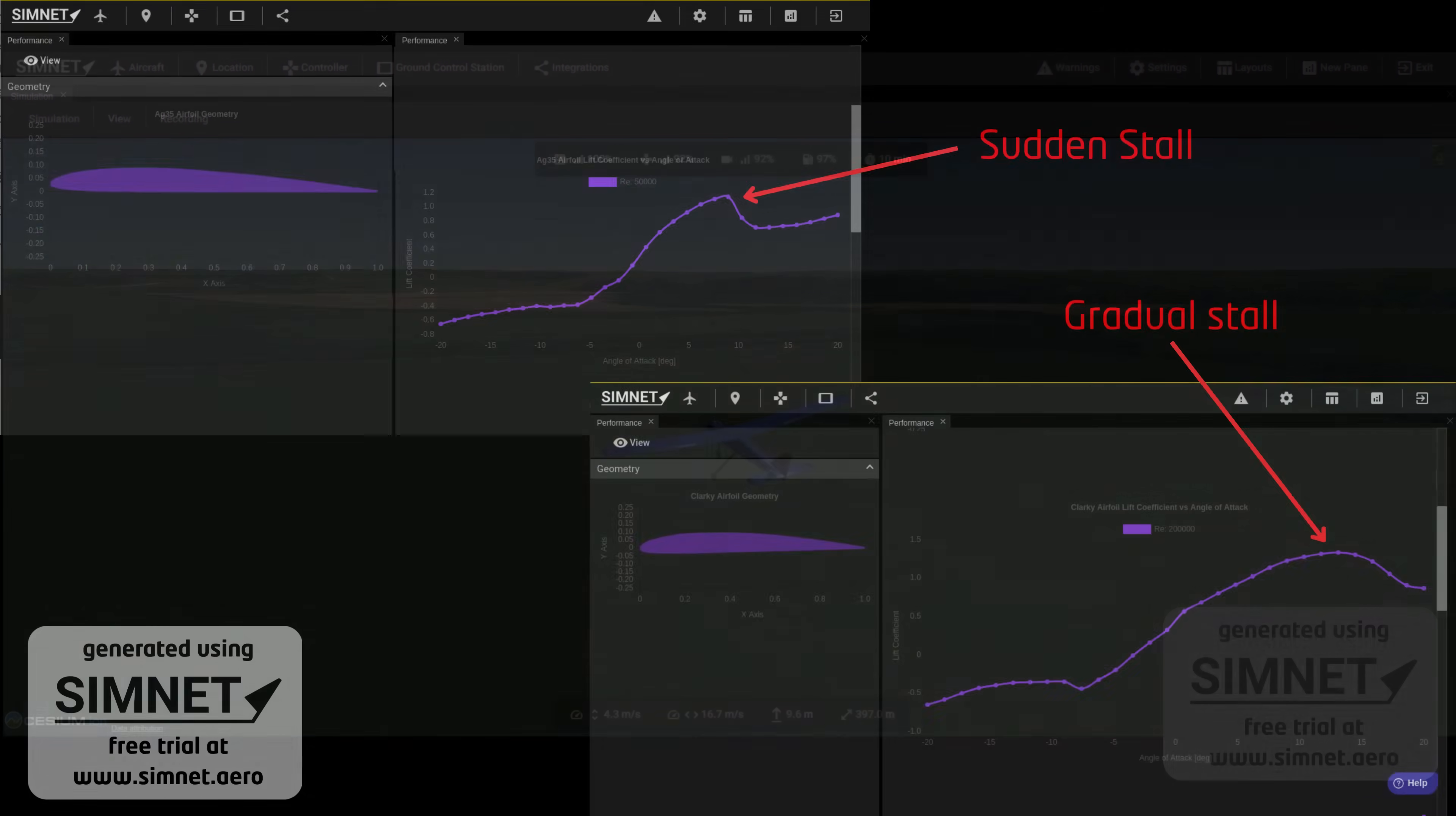Additionally, it's important to recognize that stall characteristics vary among airfoils. Some exhibit a steep decline in lift at stall, whereas others demonstrate a more gradual reduction. A gradual decrease in lift is generally preferred for its predictability during stall conditions. Rounded leading edges on airfoils usually result in more favorable stall characteristics than those with sharper leading edges at the cost of increased drag.